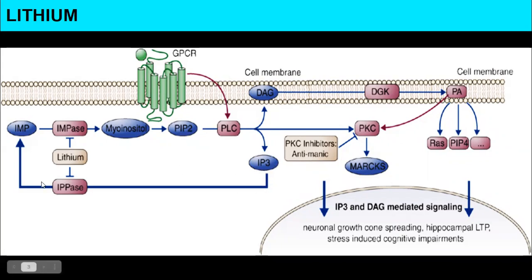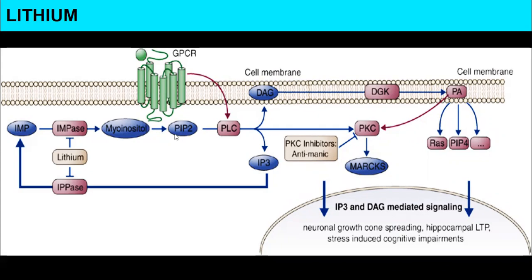IP3 is recycled: it produces inositol, which is reused to produce myoinositol, and then to produce PIP2. We are inhibiting this re-synthesis — the re-usage of IP3 to produce more PIP2. Lithium inhibits the enzyme IMPA, so no more myoinositol is produced, no more PIP2 is produced, and the entire cycle stops.